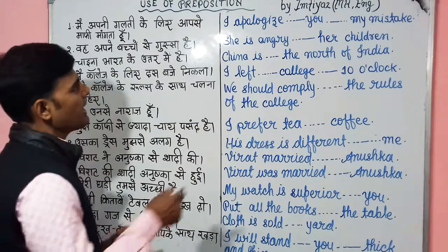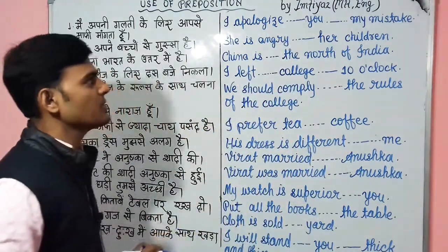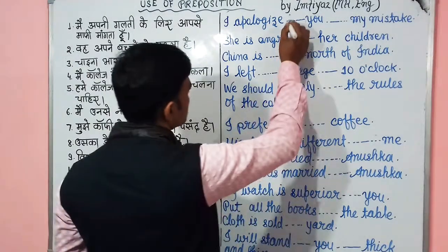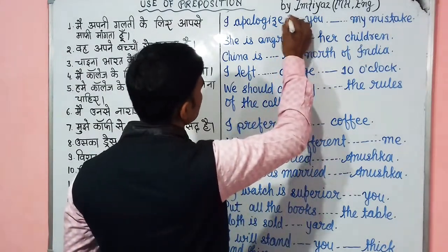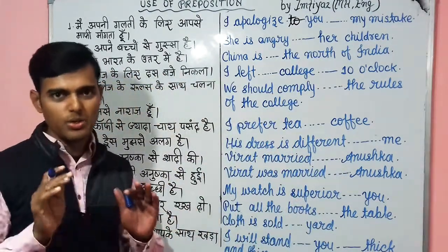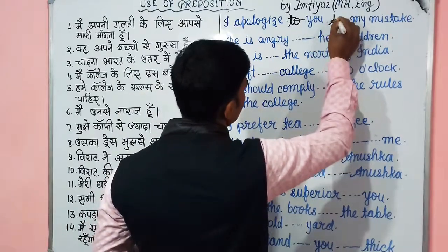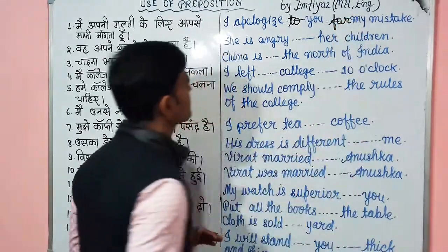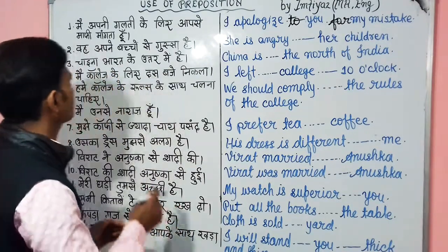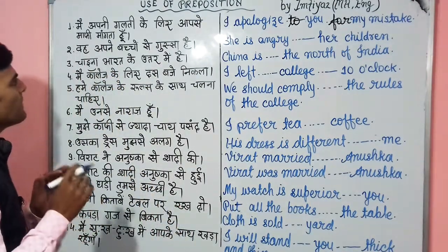I apologize to you for my mistake. Apologize के साथ हमेशा 'to' का यूज होता है। अपनी गलती के लिए — I apologize to you for my mistake.